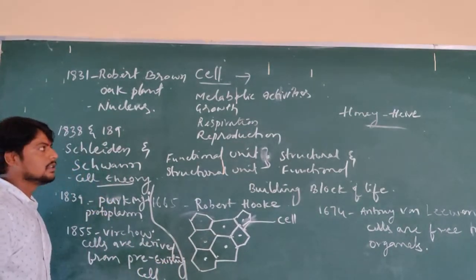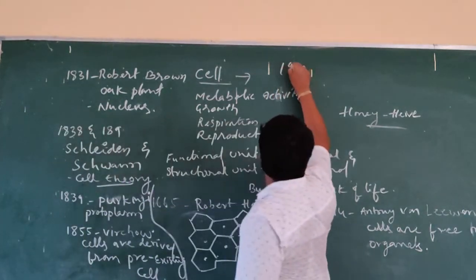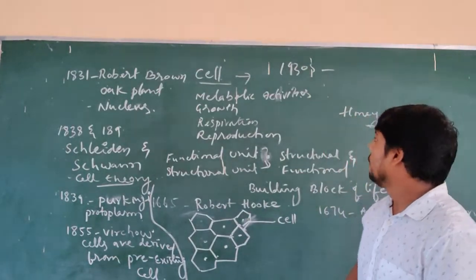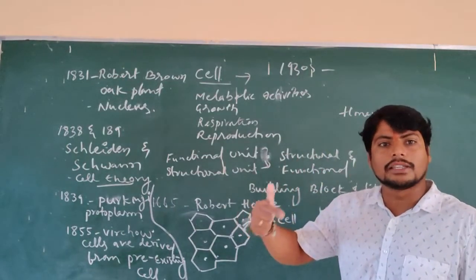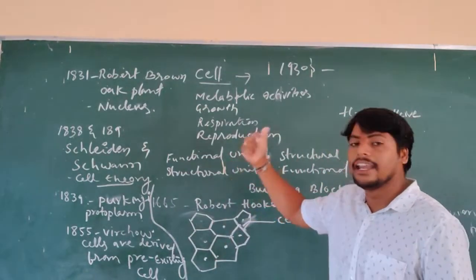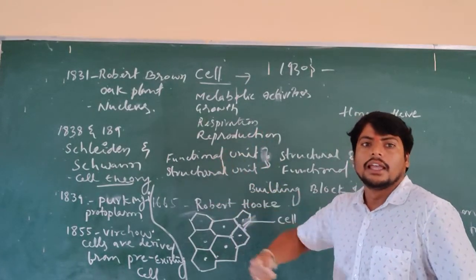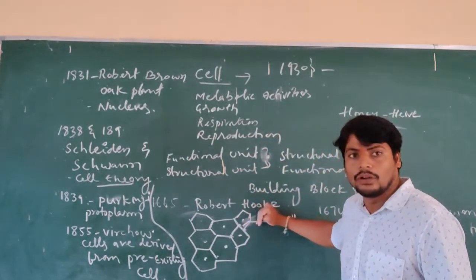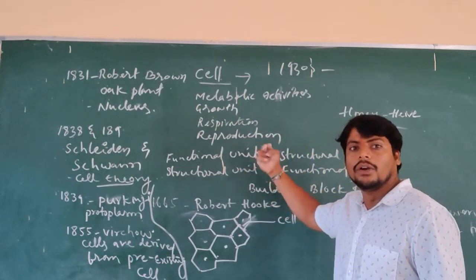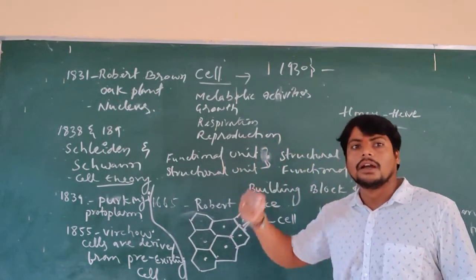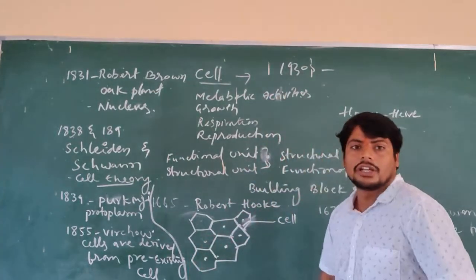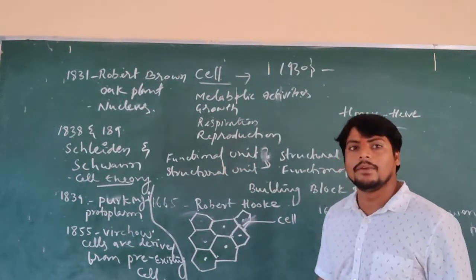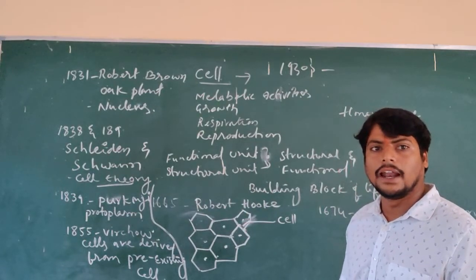After the 1930s, the electron microscope was discovered, which made it possible to study in detail the structure and function of the cell and its components. The development that was started by Robert Hooke continued, and it was possible to study the cell and its components in full detail after the invention of the electron microscope in the 1930s.